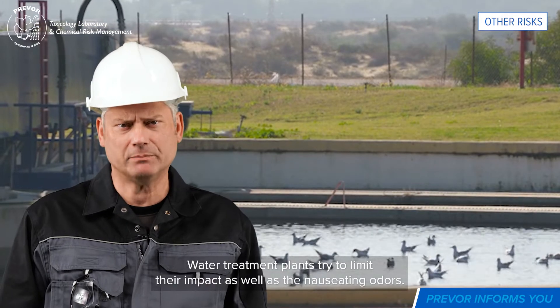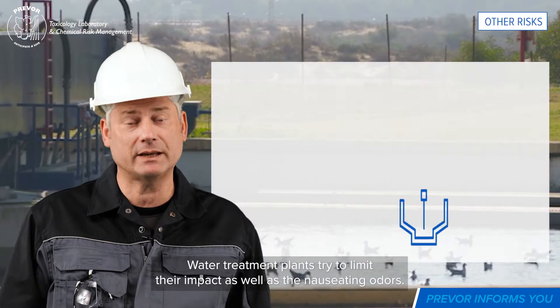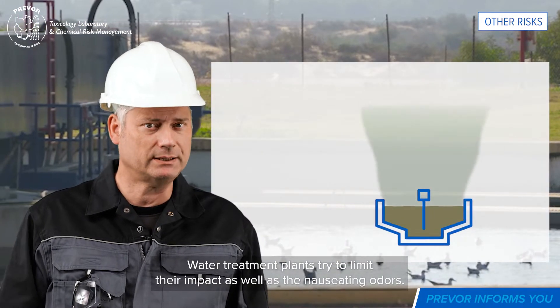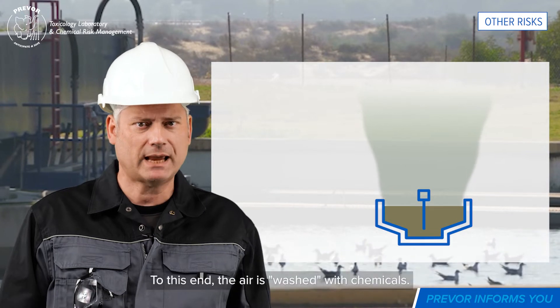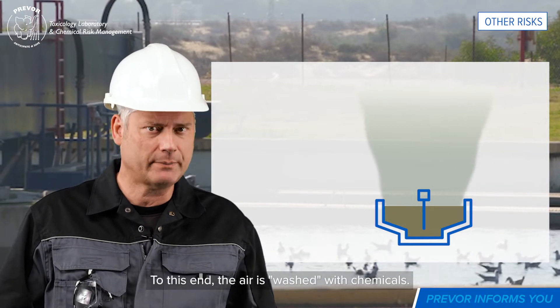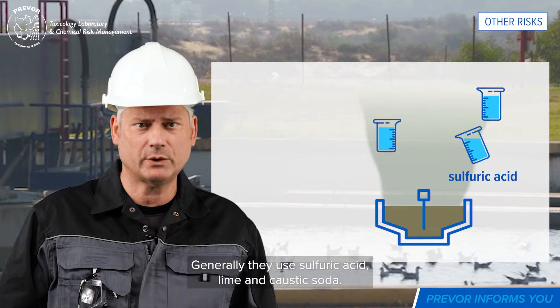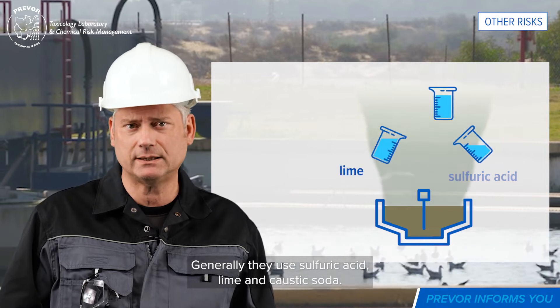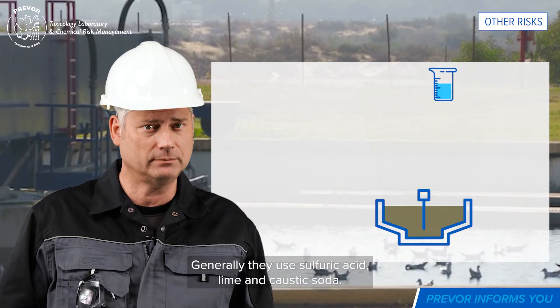Water treatment plants try to limit their impact as well as the nauseating odours. To this end, the air is washed with chemicals. Generally, they use sulfuric acid, lime, and caustic soda.